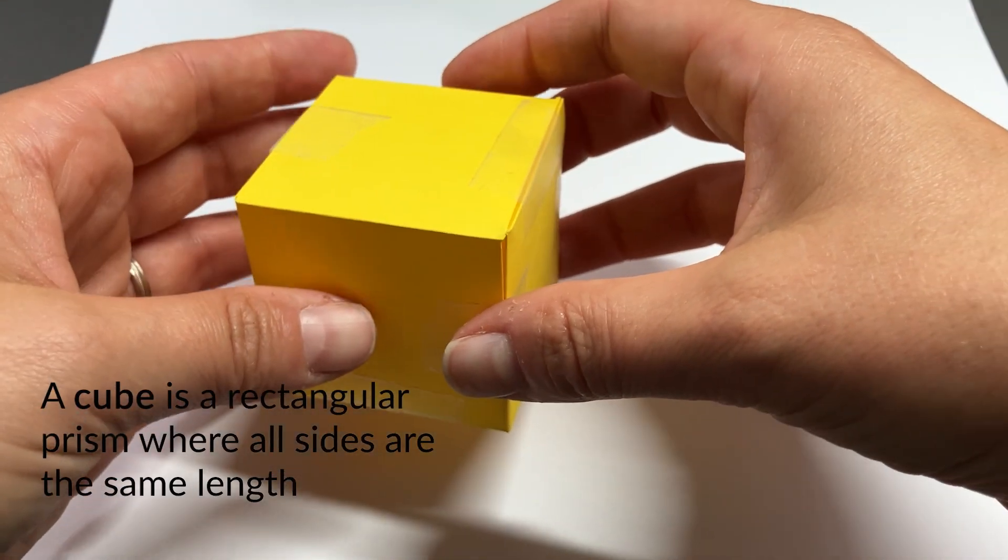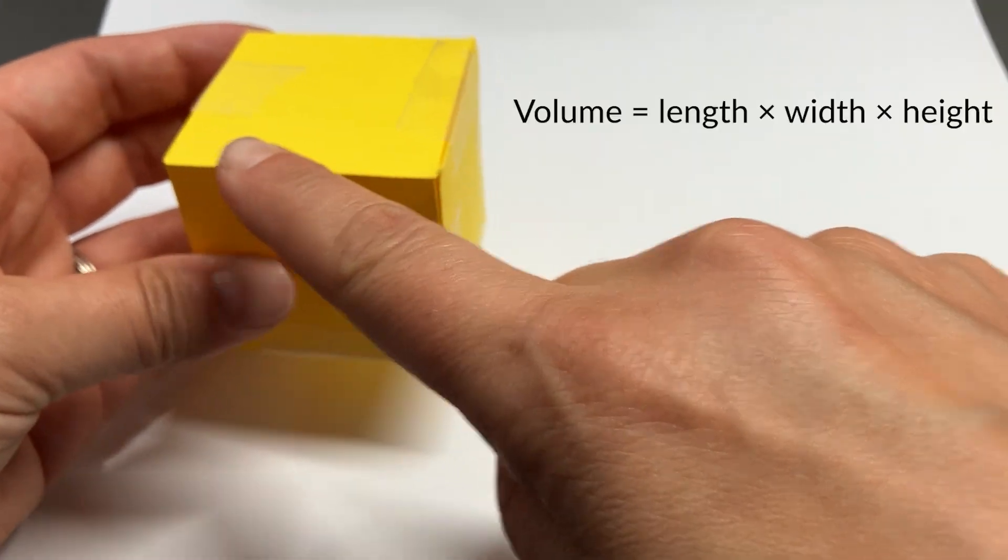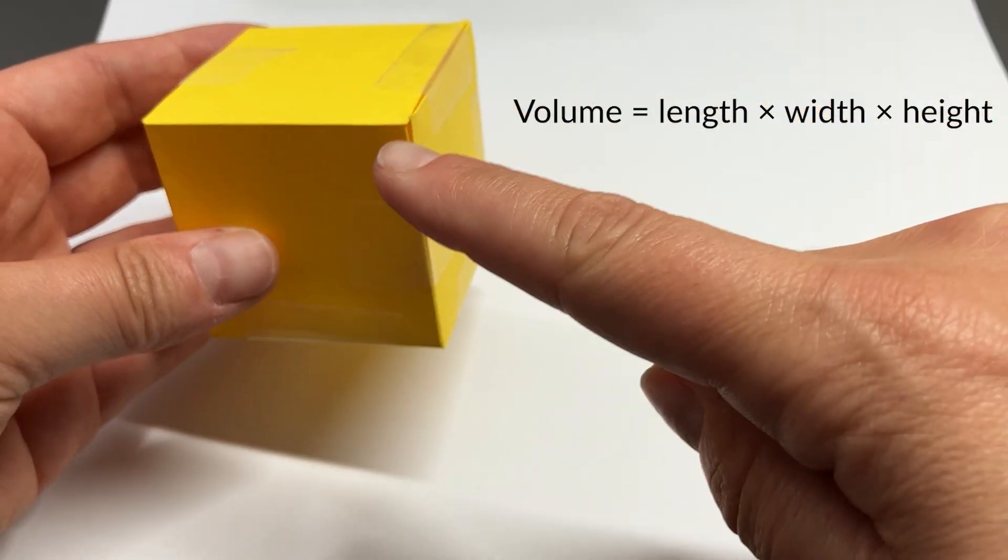To find the volume of a cube, I can multiply the length by the width by the height.